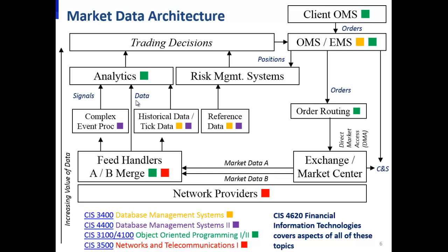Database systems roles are also important. The required course CIS 3400 covers SQL — the Structured Query Language. Reference databases and historical databases are run off SQL databases such as DB2 or Oracle. Order management systems also rely on relational databases on the back end. Database Management Systems 2 goes into these technologies in more depth.